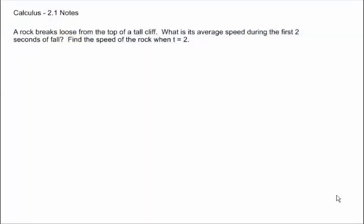All right, we've got a rock that breaks loose from the top of a tall cliff and we want to know what its average speed is during the first two seconds of fall. So find the speed of the rock when t equals two.